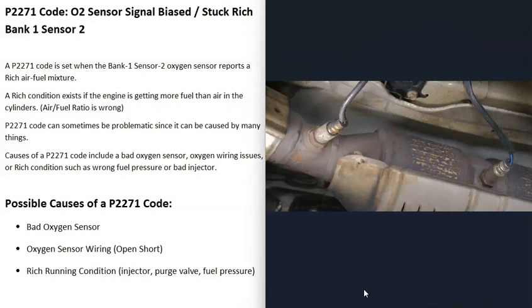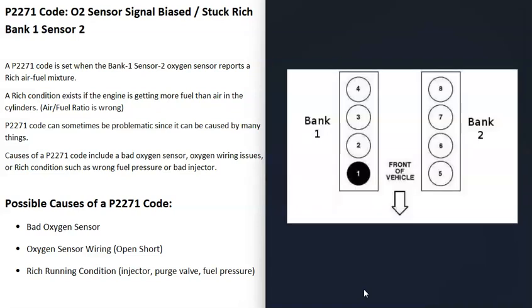If you have a V6 or V8 engine, you'll have two banks. If you find the number one cylinder on the engine, that's the bank one side, and the other side is bank two. Bank one is the side the computer sees a problem with. If you have a four-cylinder engine, you'd only have one bank.